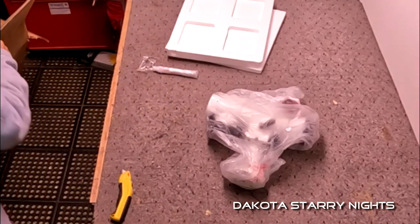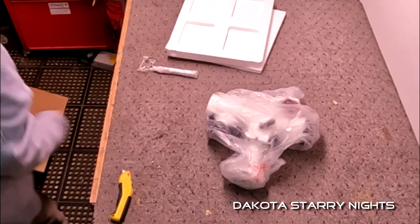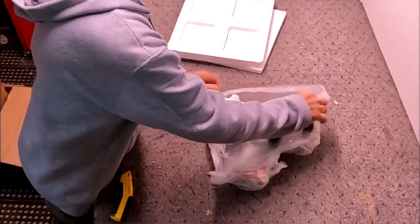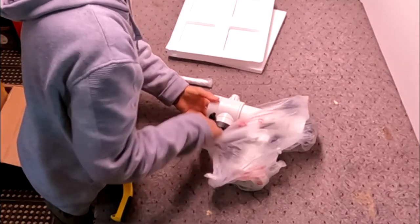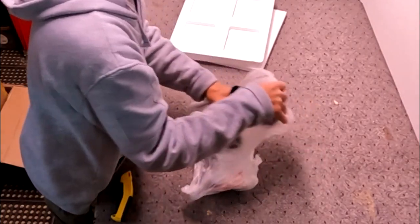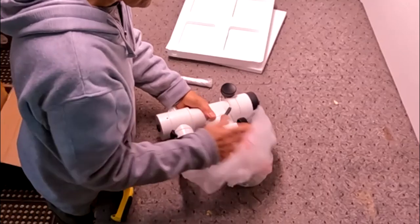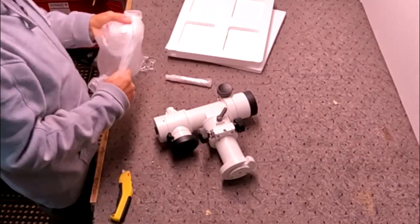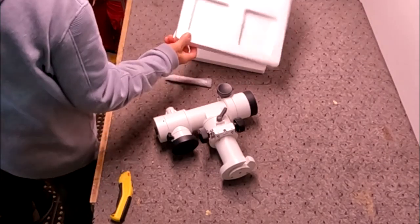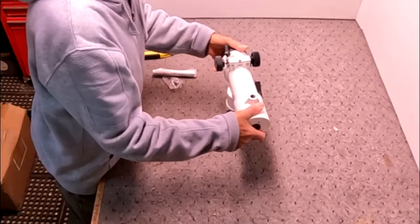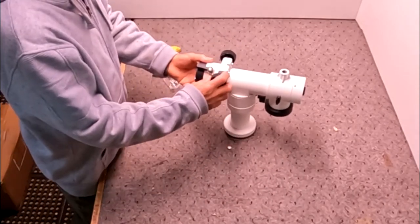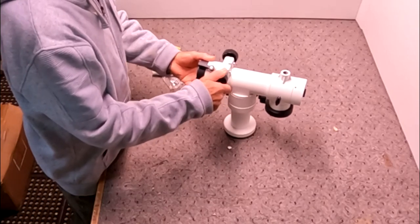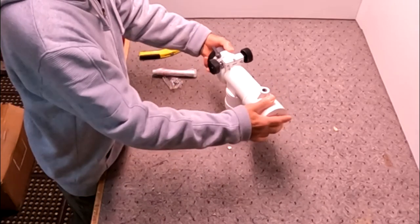Pretty nicely boxed. It comes with a counterweight bar. I had intentions of putting setting circles on it. The problem with my Twilight 2 was it didn't have slow-motion controls. And this feels pretty sweet. It really makes a difference for high power if you're doing planetary work.